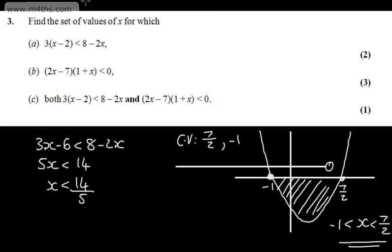So we're coming this way. And we can say that the values that satisfy both are going to be from 14/5 to -1. So we can say for part c,